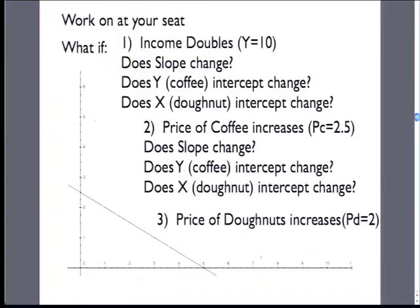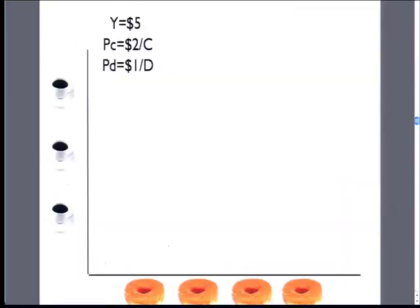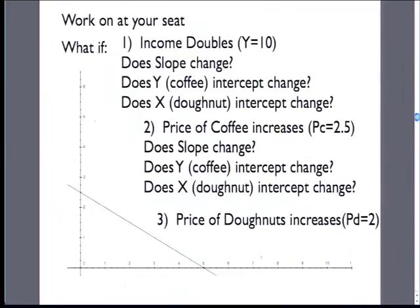Here's some math for you to work on at your seat — five minutes with the person next to you. Three changes to the budget constraint: first, income doubles — does the slope change, does the intercept change, does the donut intercept change? Second, an increase in the price of coffee. Third, an increase in the price of donuts. Take five minutes and try to draw these three changes with the person sitting next to you.